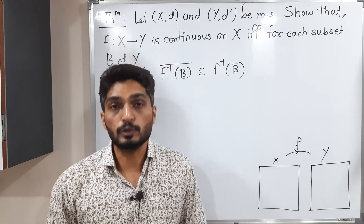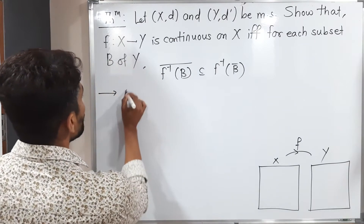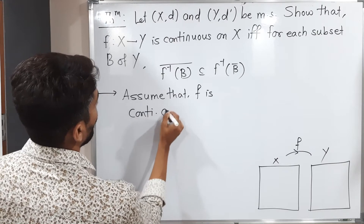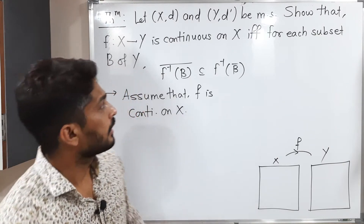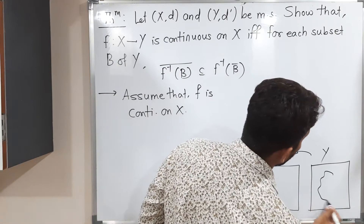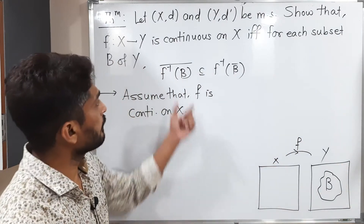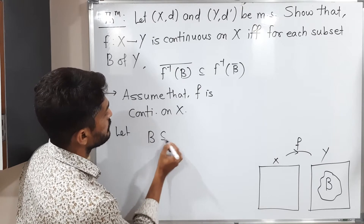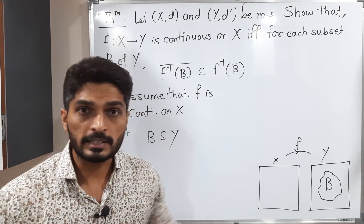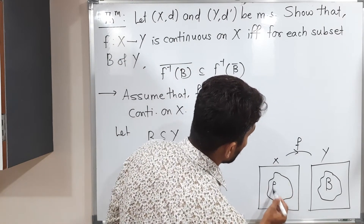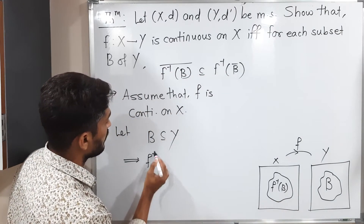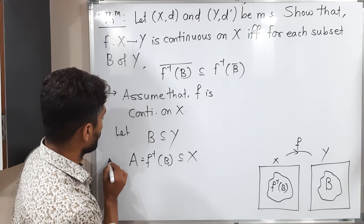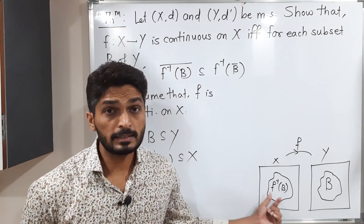Let us start with the first part. Assume that f is continuous on X. We are taking one subset of Y. Let B be any subset of Y, and we have to prove that the subset relation holds for f inverse of B. So f inverse of B is a subset of X — I am calling it A. So A is a subset of X.